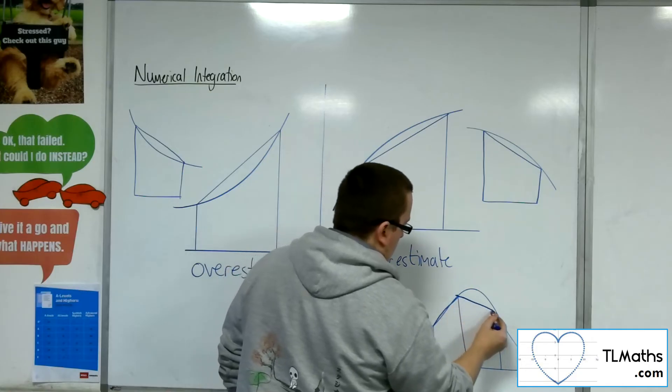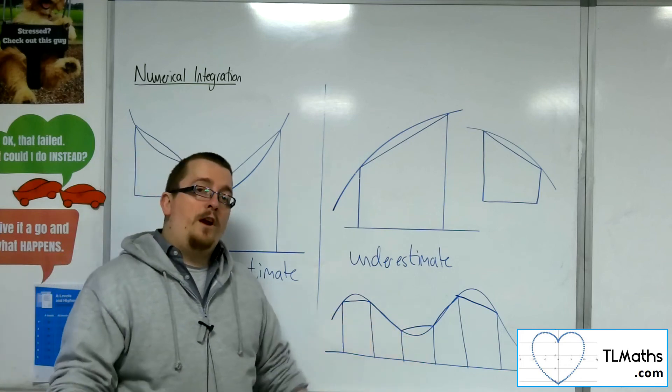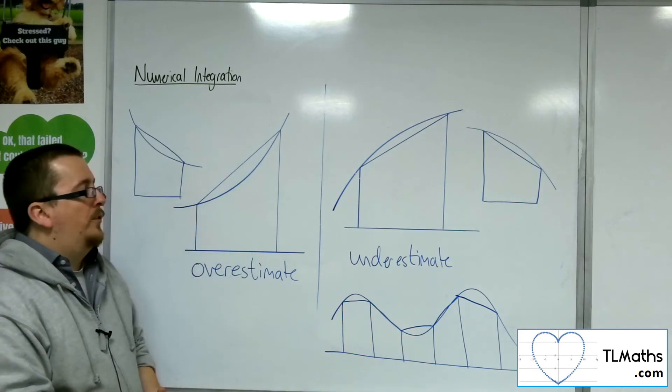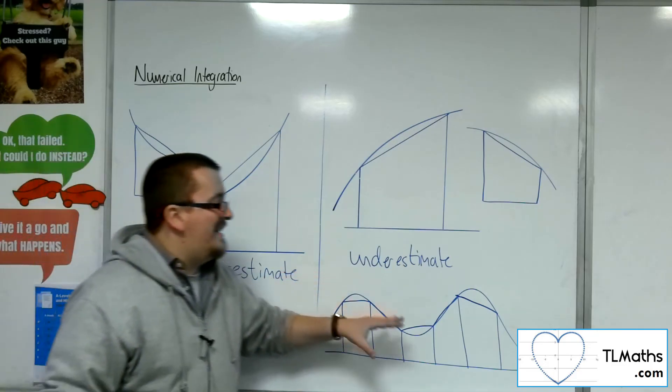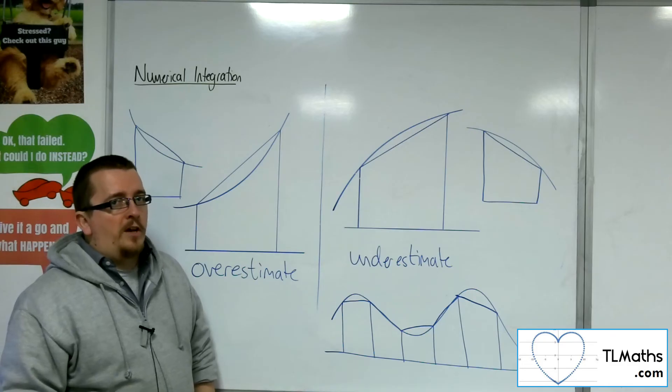So some bits will be underestimates, other bits will be overestimates. And without being able to calculate the exact area of the curve, it's going to be very difficult to determine.